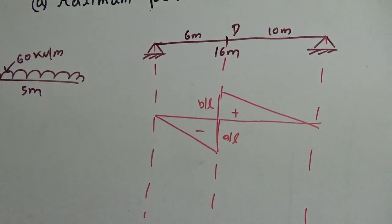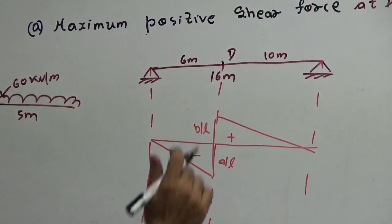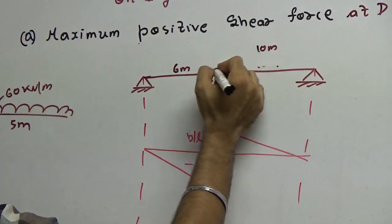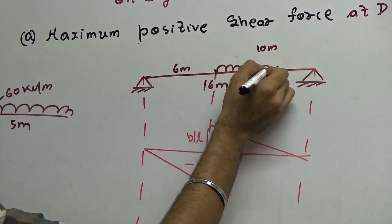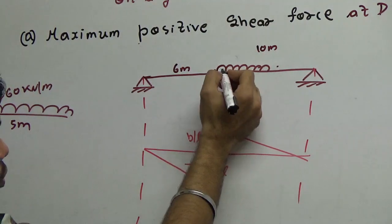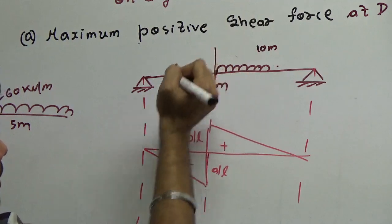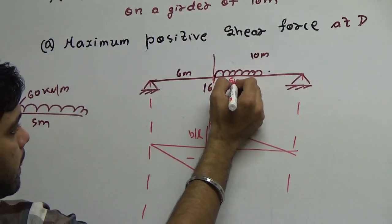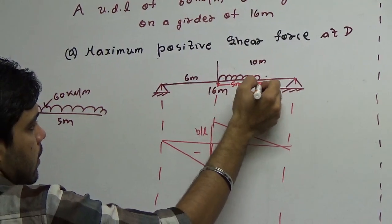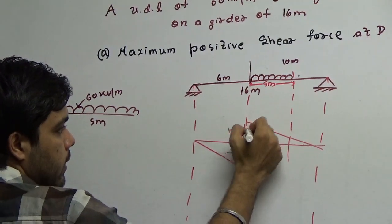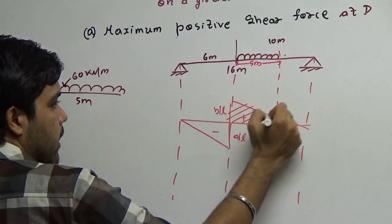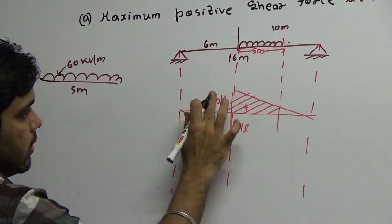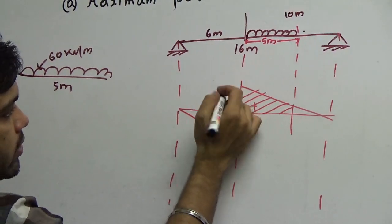Since we want positive shear force, the UDL must be placed completely on the positive portion of the ILD. The positive portion spans 10 meters. The UDL is 5 meters long. The peak ordinate on the positive side is B/L = 10/16 = 0.625.